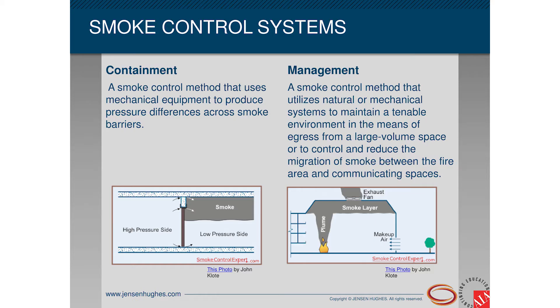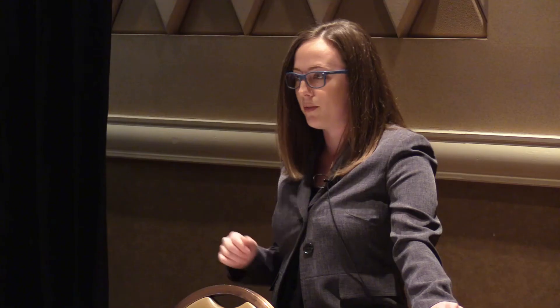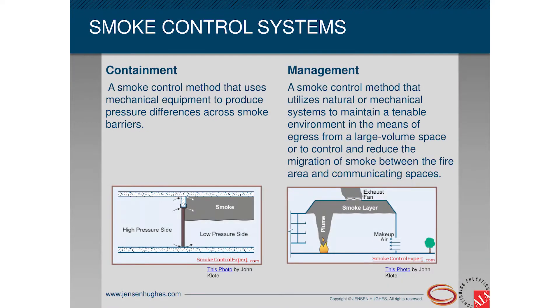Smoke is a contaminant. For smoke management systems, you can use natural or mechanical ventilation to remove smoke, maintain tenability, or prevent smoke from moving to a communicating space. These are what you're going to see in a large volume area — smoke management is the type of system you'll see in a large sports arena, shopping malls, atria, or casinos like this building.